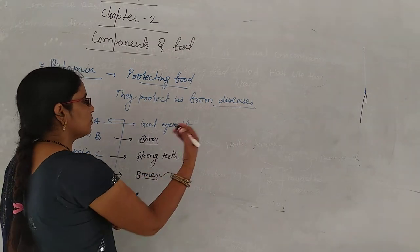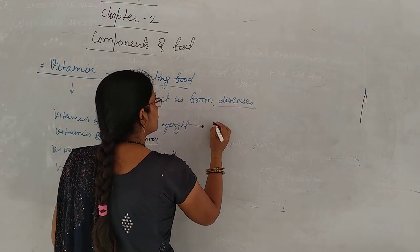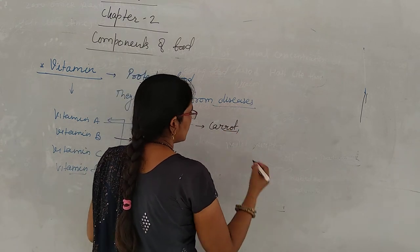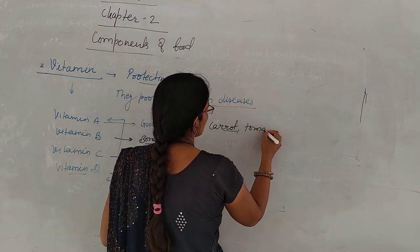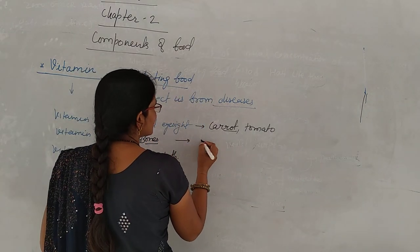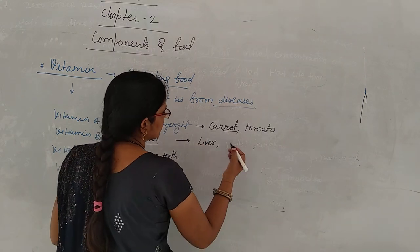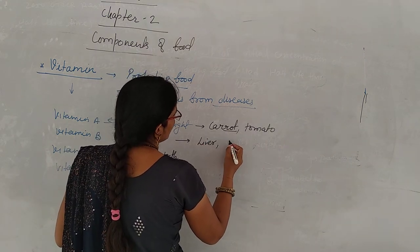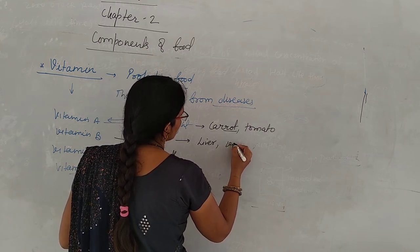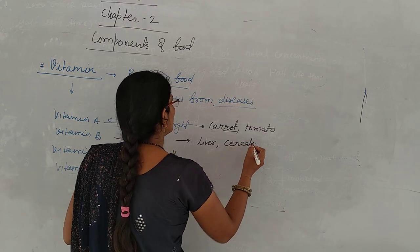If you don't eat vitamin A, especially vitamin A, the root source of food is Carrot, tomato, etc. If you don't eat vitamin B, it will come from cereals. For example, liver, wheat. These are the cereals, whole grains.